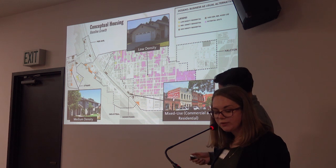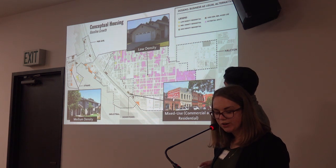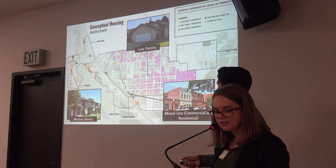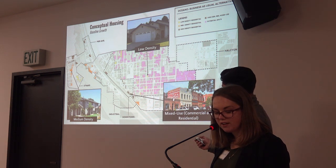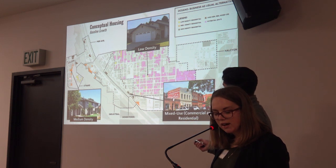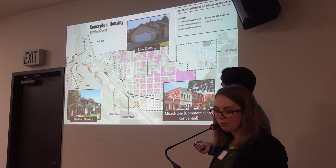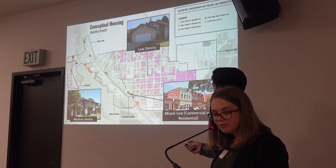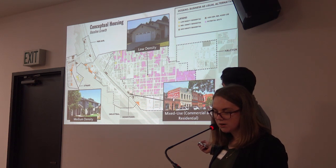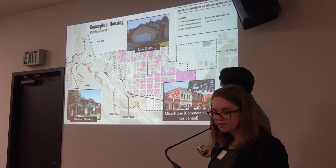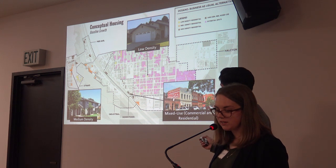To maintain the low-density character of central Oceano while accommodating future growth, the vacant lots in Strand and Pier Avenue contain medium to high-density housing. High-density housing could consist of townhomes, condominiums, and small apartments. Downtown also accommodates high-density housing with some mixed-use, and single-family homes under this alternative remain the predominant housing type in Oceano.